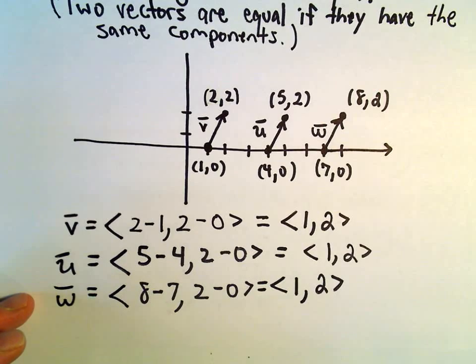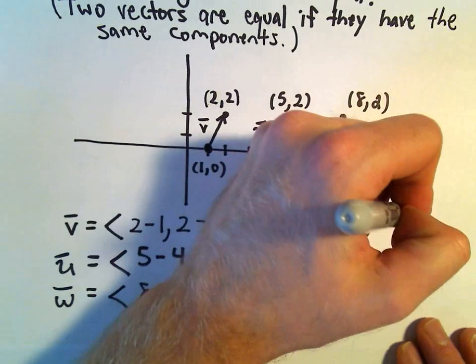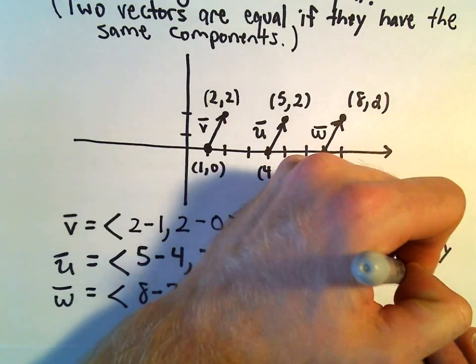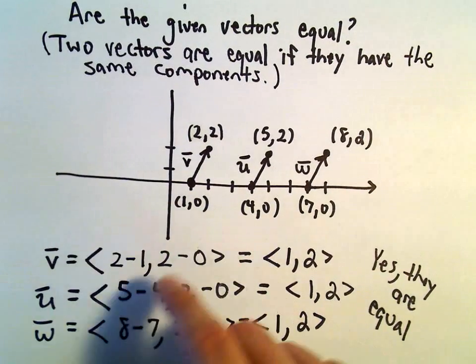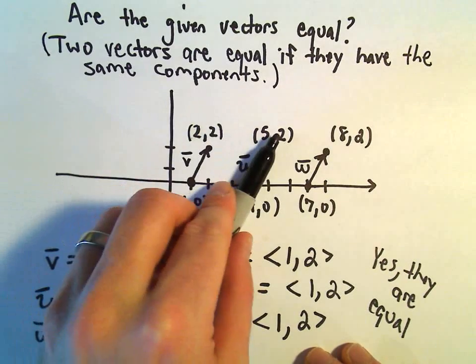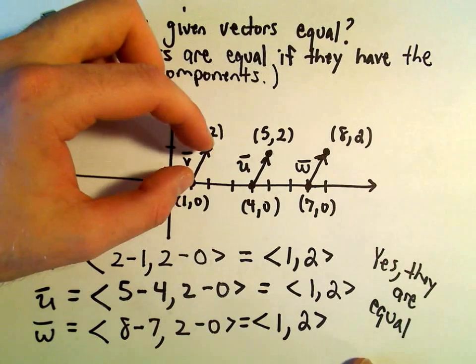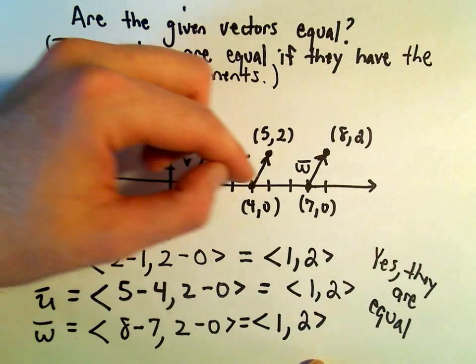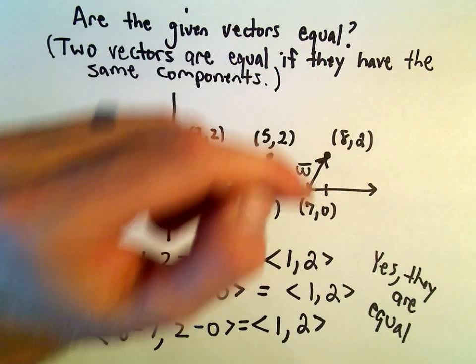So all three of these vectors, we would say, yes, they are equal. So again, it doesn't matter that they're situated in different points in the plane. They all have the same magnitude if you calculated their magnitude, and they're all pointing off in the same direction.